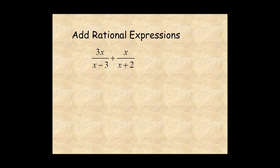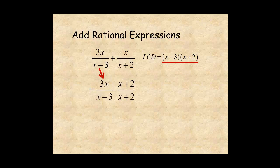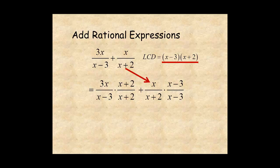Add rational expressions in the same way. Since these denominators have no common factors, the LCD is the product of the two denominators. To convert the first term to the LCD, multiply by x plus 2 over x plus 2. To convert the second term to the LCD, multiply by x minus 3 over x minus 3.